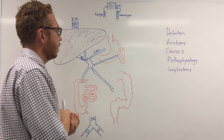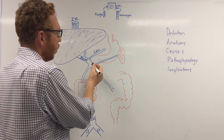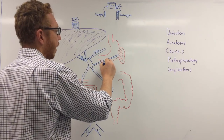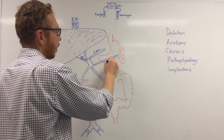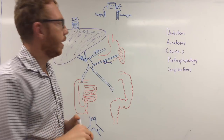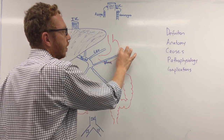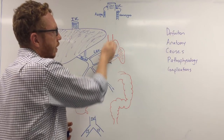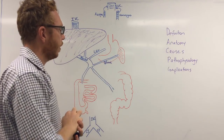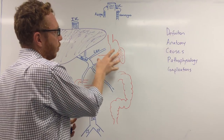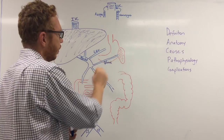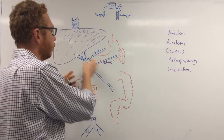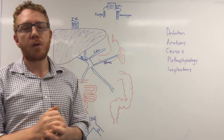Moving distally, we have the splenic vein, which drains the spleen, the greater curvature of the stomach, and the pancreas — all coming in to form, again, the portal system.